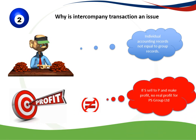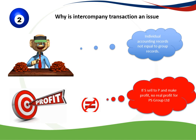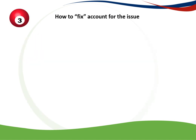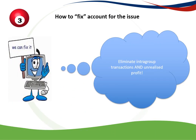So if S sells to P and makes a profit, for the group there was no real profit. In the books of S Limited, looking at the individual accounting records, there will be a profit and that is correct. But for the group as a whole, we need to do something because it's not correct. The fix is easy: we eliminate the IntraGroup Transactions and Unrealized Profit — we take out the untrue transactions that did not take place for the group, and remove the profit still sitting in the individual books.